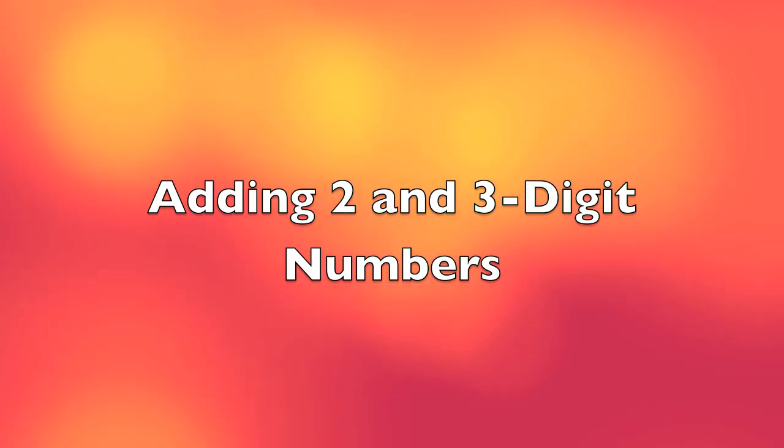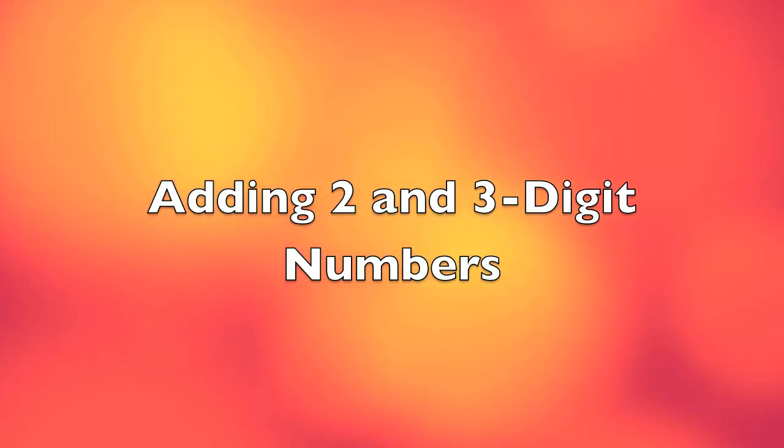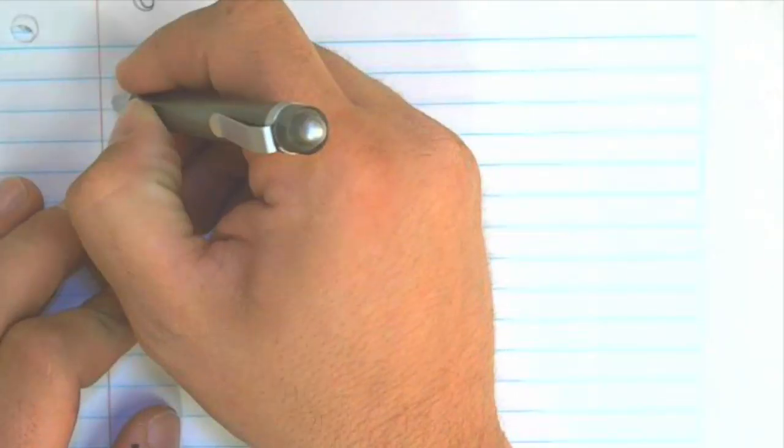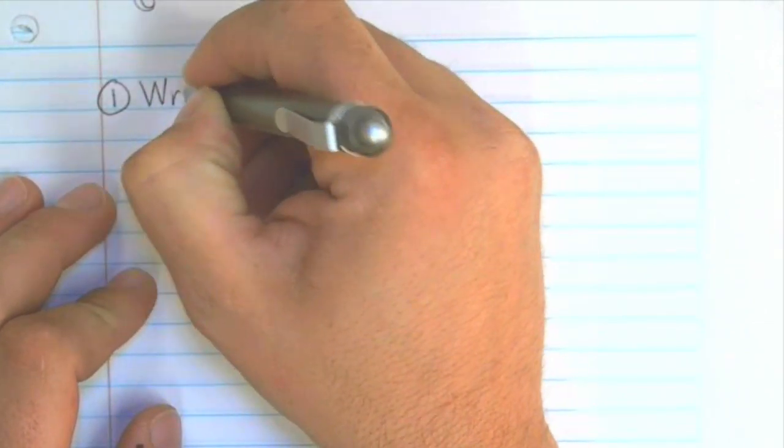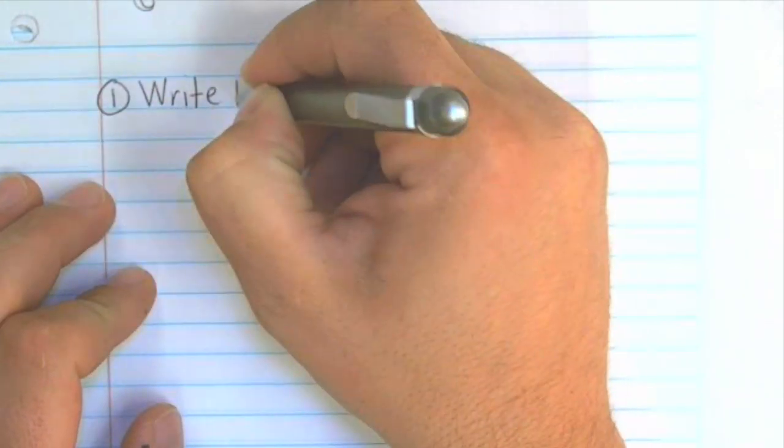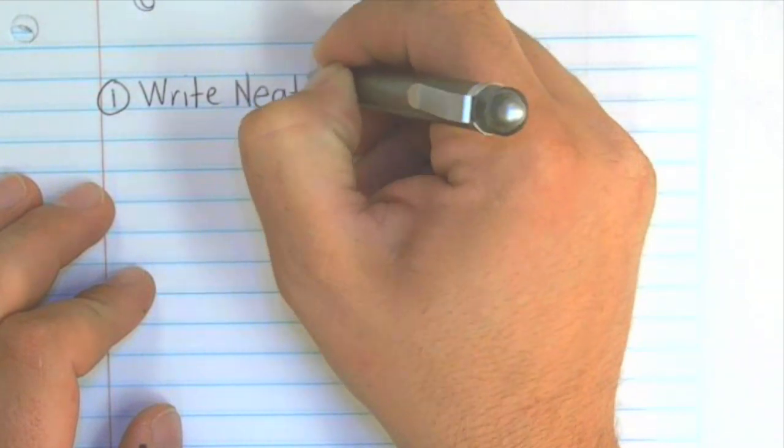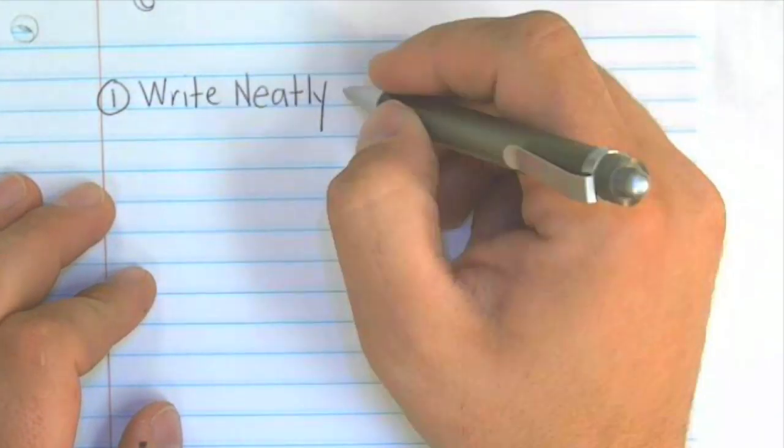Hello! Today we're going to do a quick review of how to add two and three digit numbers. So you want to start with a sheet of paper and one of the clues or tips that I use is that I write neatly. Whatever type of math you're doing, writing neatly will help you do a better job.